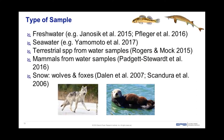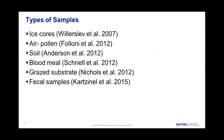There's been detection of terrestrial species and mammals from water samples, and even from snow when looking for wolves and foxes. Other sample types include ice cores, air and pollen samples, insects and bees, soil samples — where eDNA originally got its start in microbial work — as well as blood meal from ticks, grave substrates, and fecal samples.